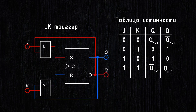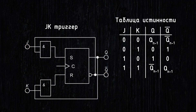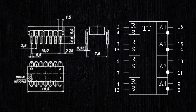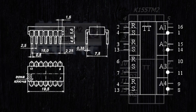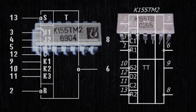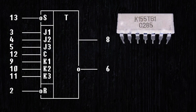If you need a flip-flop in a circuit, it's not necessary to make it from logic gates like NAND or NOR. It's more appropriate to use ready-made chips that contain RS, D, and JK flip-flops. These are TR chips with RS flip-flops, TM with D flip-flops of various configurations, and TV with JK flip-flops.